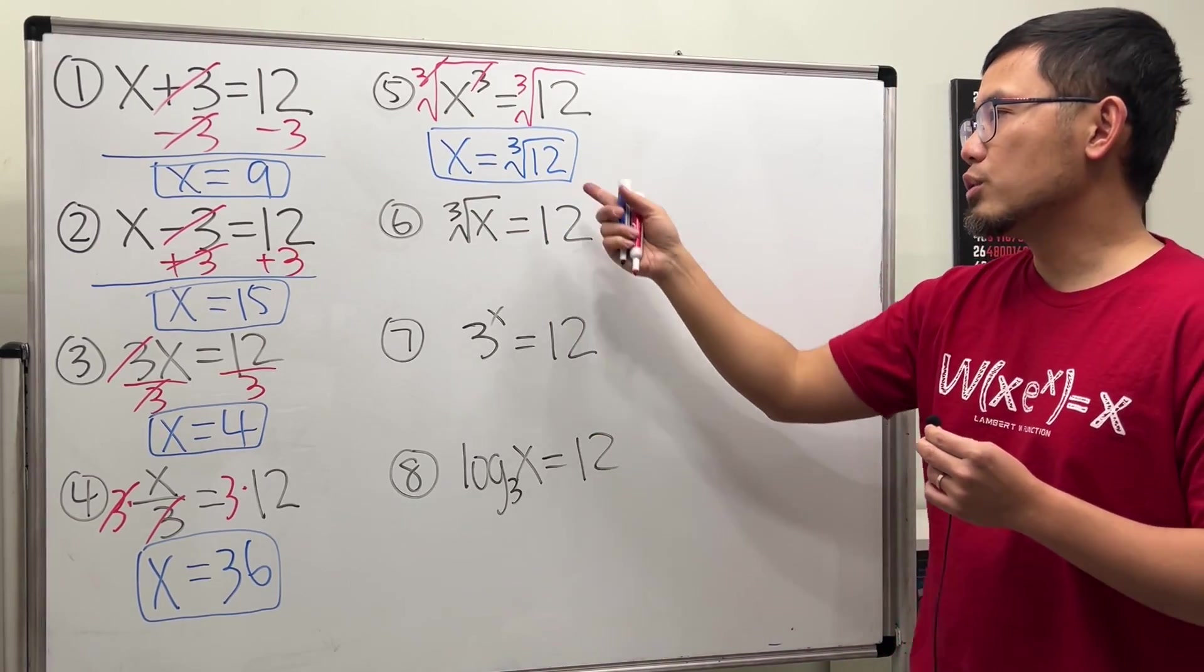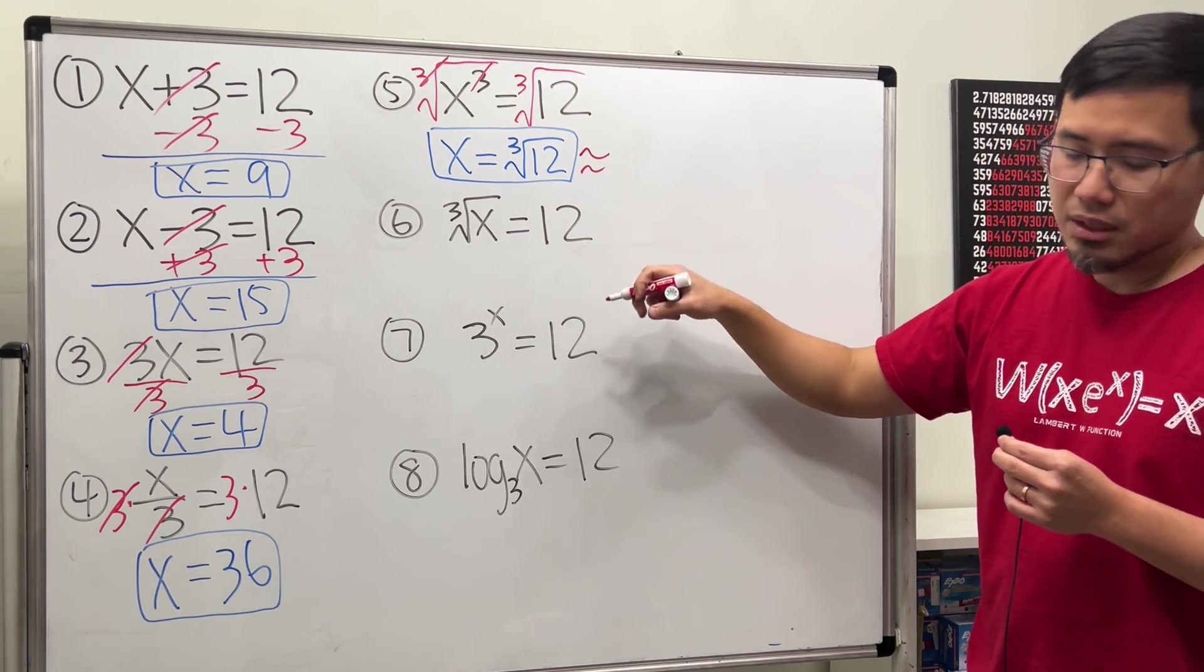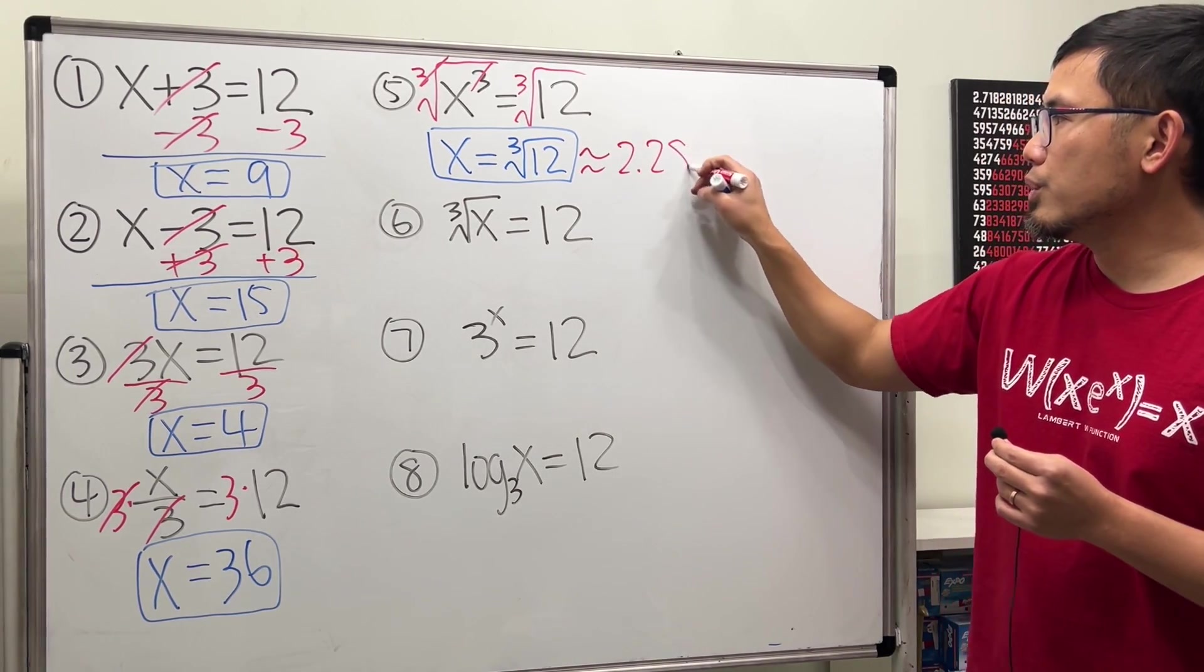And of course, sometimes you can just use the calculator to get the approximation. And I will tell you this is approximately 2.289.